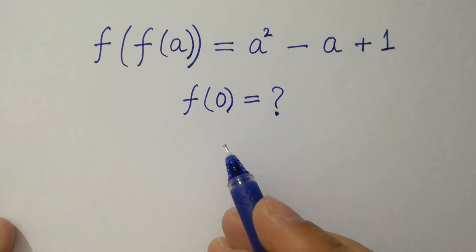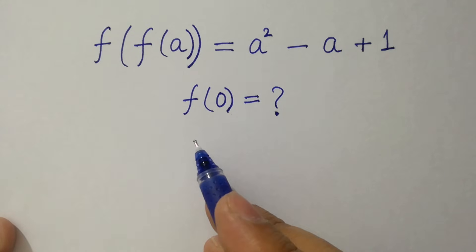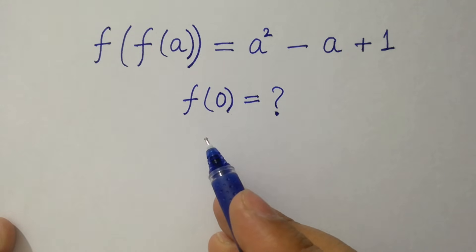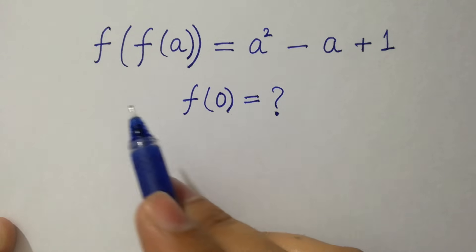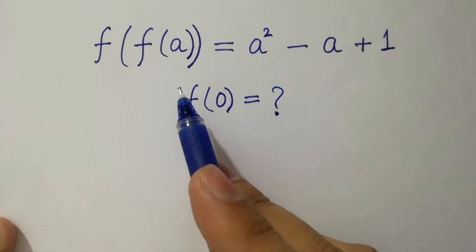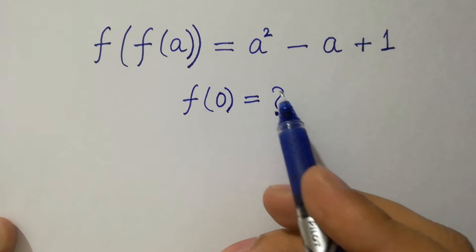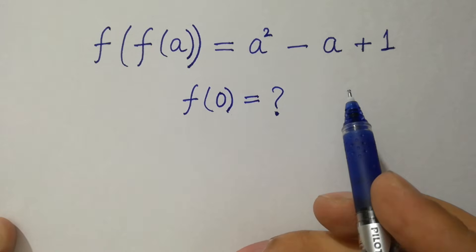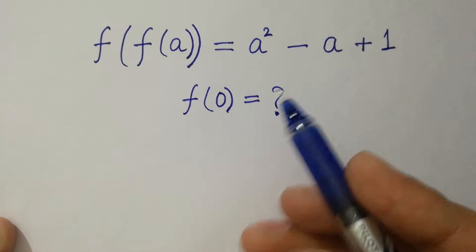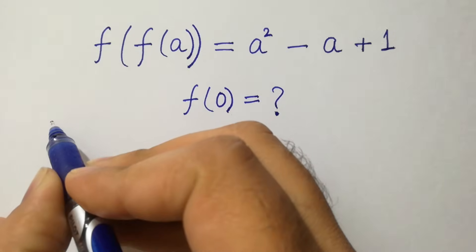Hello friends, find f of 0 if f of f of a equals a squared minus a plus 1. Let's have a solution.